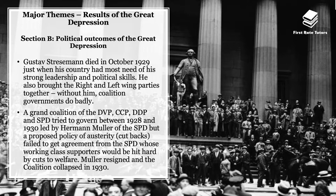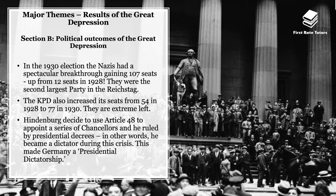However, Hermann Müller proposed a policy of austerity — cutting back government spending — which failed to get agreement from the SPD, whose working-class supporters would be hit hard by cuts to welfare. This led him to resign and the coalition collapsed by 1930. In the 1930 elections, the Nazis had a huge breakthrough, gaining 107 seats — up from just 12 in 1928 — making them the second largest party in the Reichstag. Hindenburg then used Article 48 to appoint chancellors and ruled by presidential decree, essentially making Germany a presidential dictatorship.